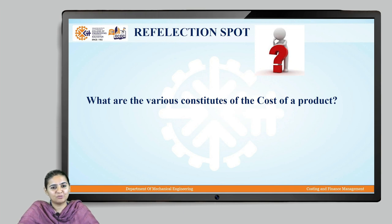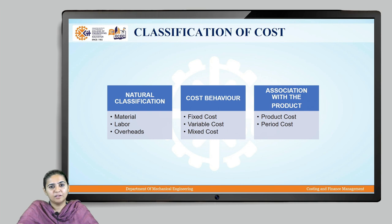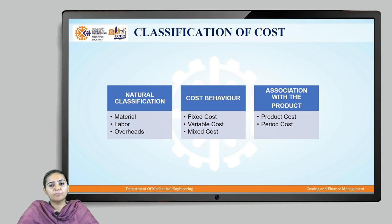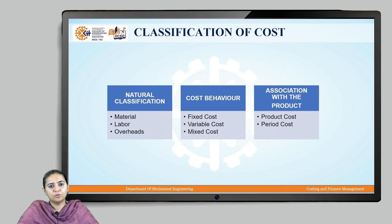Let us discuss the classification of cost. First is the natural classification, which involves direct material, indirect material, direct labor, indirect labor, and direct and indirect overheads. Then we have classification according to cost behavior: fixed cost, variable cost, and mixed cost. Lastly, we will study classification associated with the product, which involves product cost and period cost.